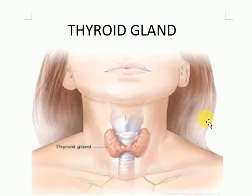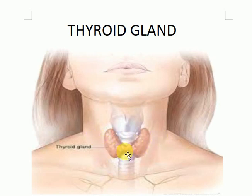Hello students, today after a long time I will be extending my physiology playlist, discussing the thyroid gland, which is the cornerstone of our endocrinology chapter. The thyroid gland is a very important endocrine gland located in the front of the neck just below the Adam's apple. It has two lobes connected by an isthmus and affects almost all organs of our body, including the central nervous system, cardiovascular system, and respiratory system.